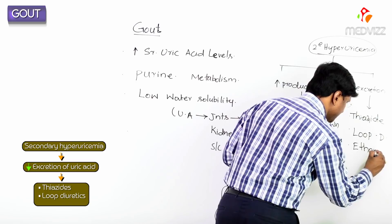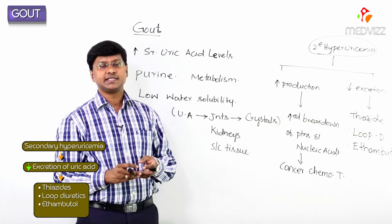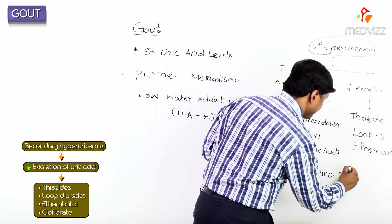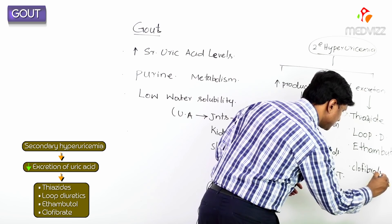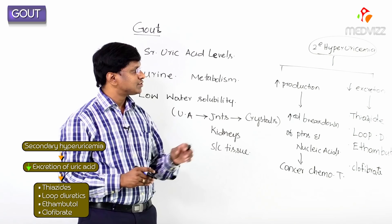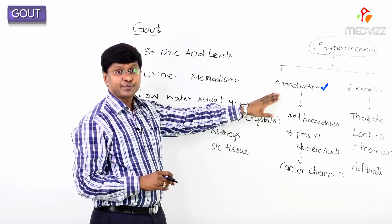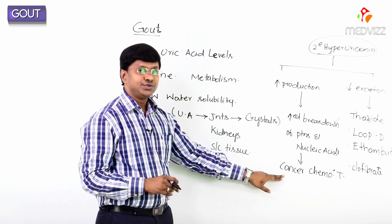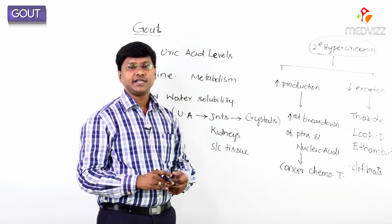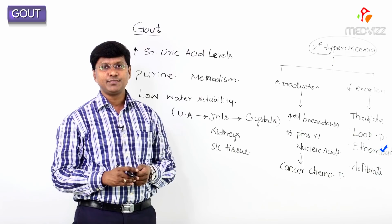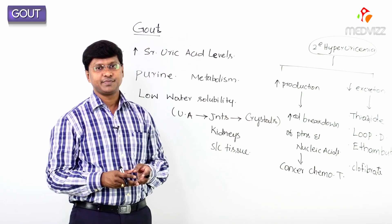Other drugs which decrease excretion include the anti-tubercular drug ethambutol, and clofibrate, which is an anti-hyperlipidemic drug used in dyslipidemia. So secondary hyperuricemia may be due to increased production — seen wherever there is increased breakdown of proteins and nucleic acids due to cancer chemotherapy — or decreased excretion, seen with thiazide diuretics, loop diuretics, ethambutol, or clofibrate.